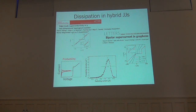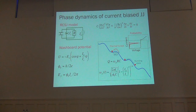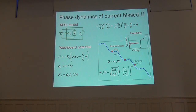The phase dynamics of a current-biased Josephson junction was introduced on Tuesday. The resistively and capacitively shunted junction model tells us that a Josephson junction can be modeled by an ideal Josephson element in parallel with the resistance and a capacitance, which comes from the electric nature of the barrier. Taking into account the two Josephson equations and the equation for the equivalent circuit, we obtain a differential equation for the phase particle analogous to the motion of a particle in the tilted washboard potential. The damping of this motion is given by the quality factor Q, which is the plasma frequency times the RC product.